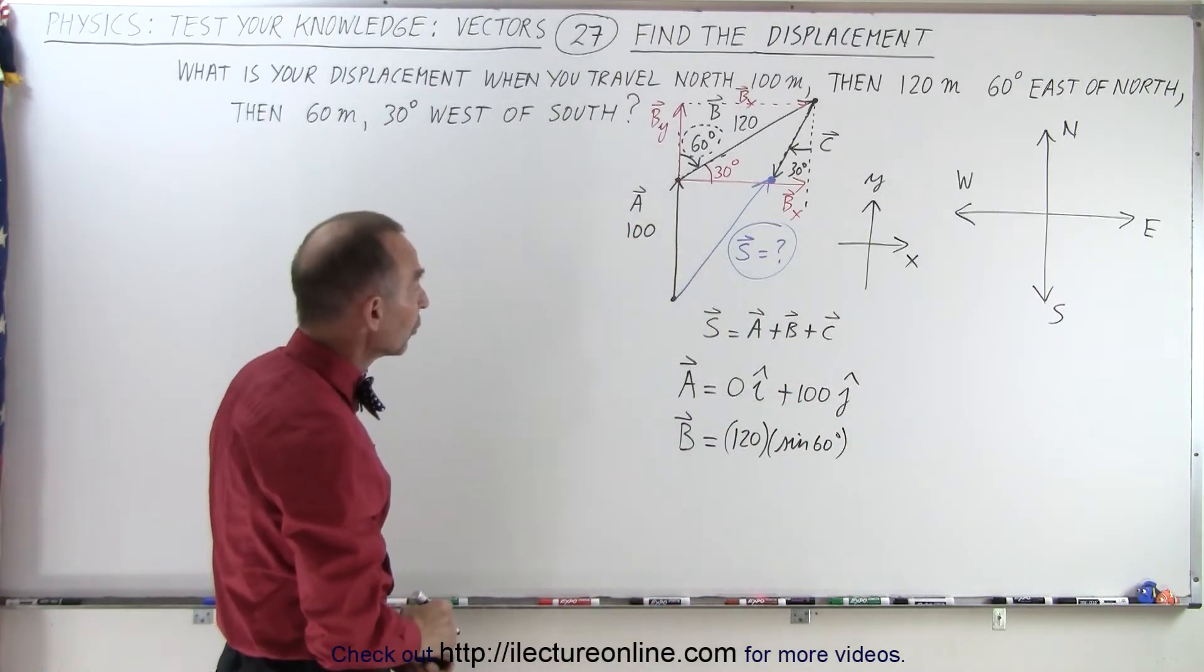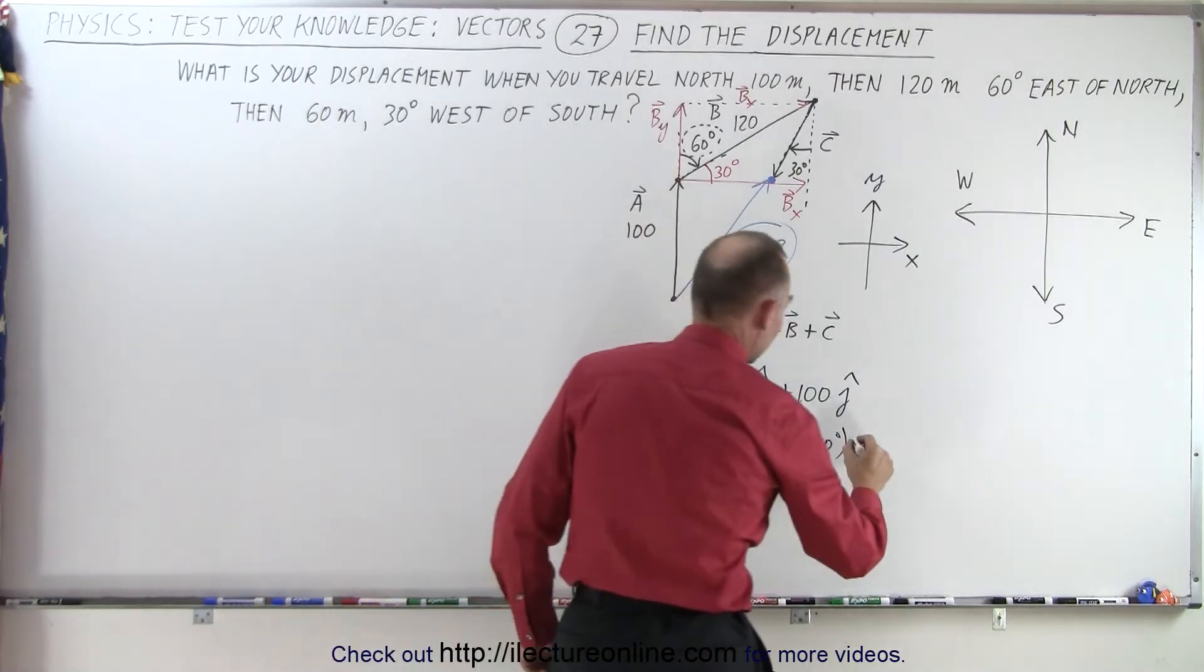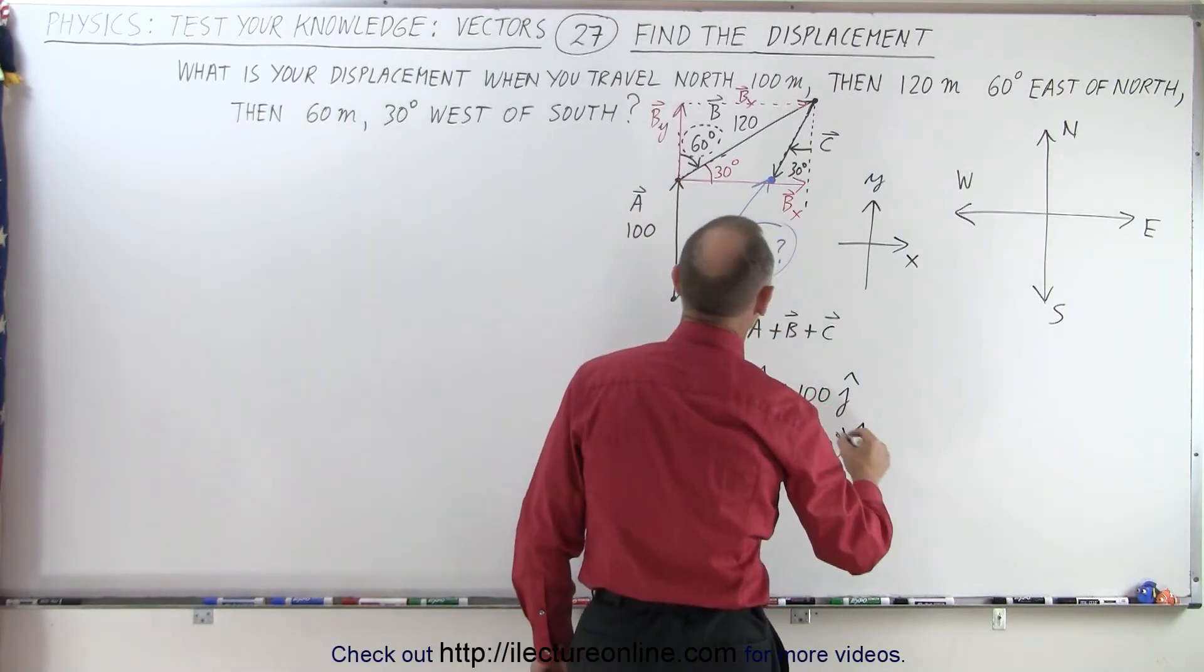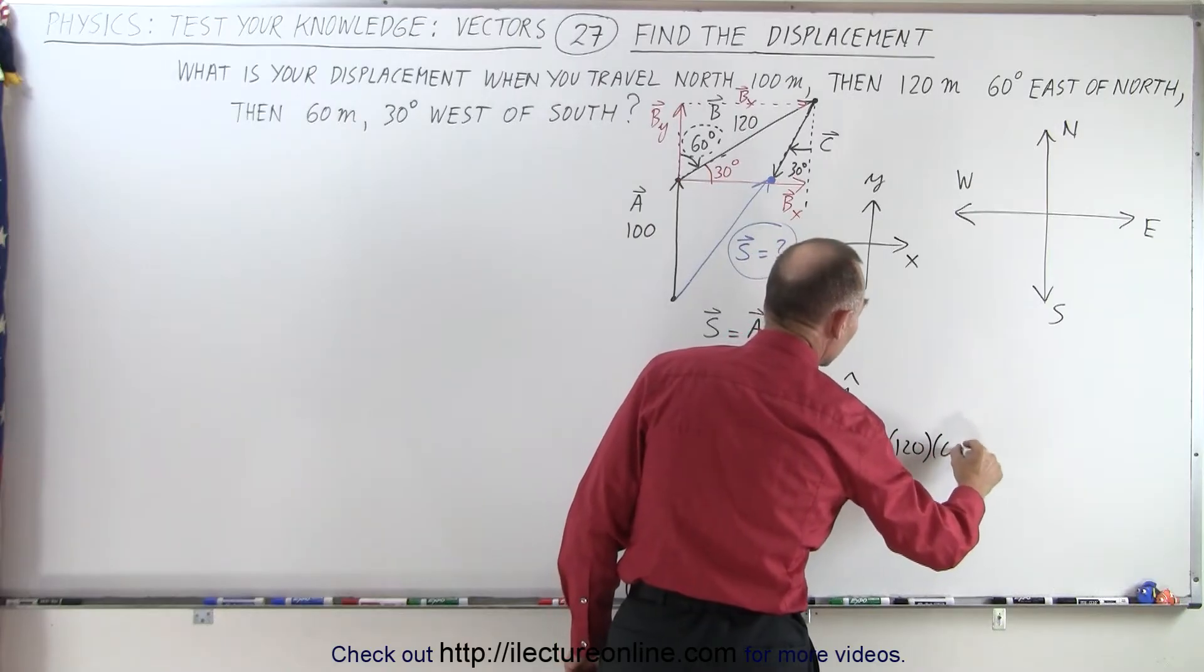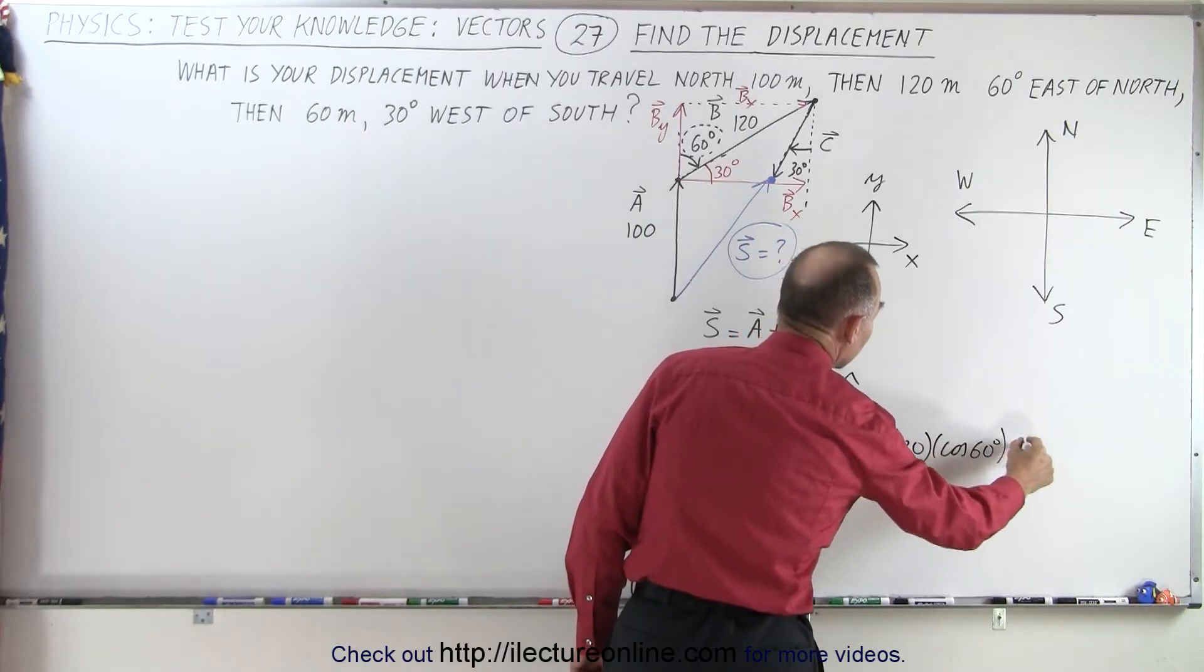whichever angle you want to use. And that would be in the I direction, and then plus 120 times the cosine of 60 degrees in the J direction.